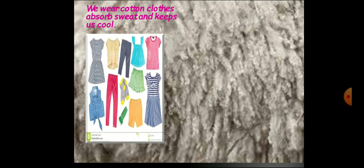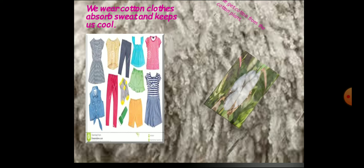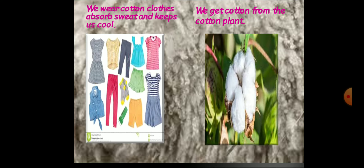The first season is summer season. We wear cotton clothes, which absorb sweat and keep us cool. So in summer season we wear cotton clothes. Where does cotton come from? We get cotton from the cotton plant. In the farm, cotton plants are grown.